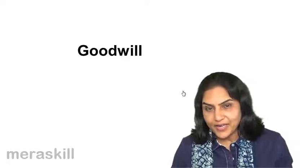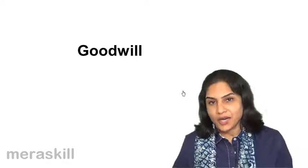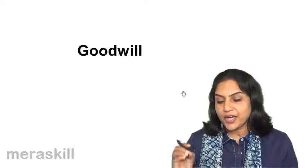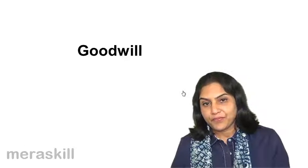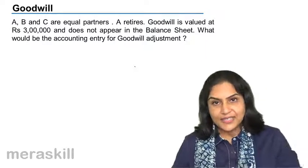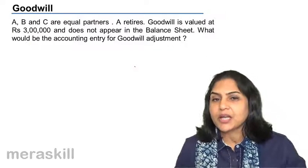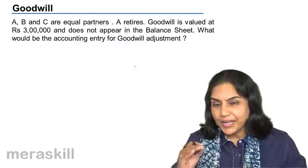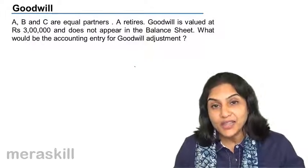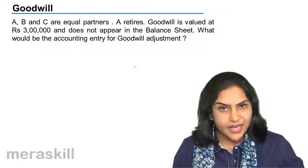So, when a partner retires, his share of goodwill is credited to his account. His share of goodwill may have to be valued up to that date and his share in that goodwill is credited to his account. If we credit the retiring partner's capital account, what do we debit? We debit the remaining partners — the gaining partners' capital accounts in their gaining ratio.